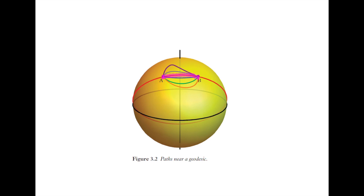In this case, the extremal length happens to be an absolute minimum in length — all the paths nearby are just a little bit longer. The path between A and B the other way, along the great circle, is a path of relative maximum. In other words, paths around it here and here are just a little bit shorter.